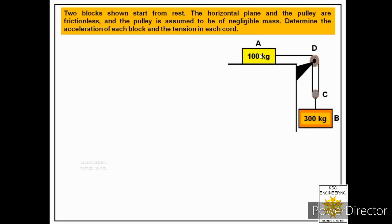We are given block A with a mass of 100 kilograms, and two pulleys: one is a fixed pulley labeled D and the second is a movable pulley labeled C. We also have block B with a mass of 300 kilograms. We are asked to find the acceleration of each block — that is, aA and aB — and the tension in each of the four chords shown.